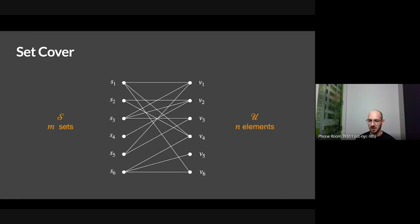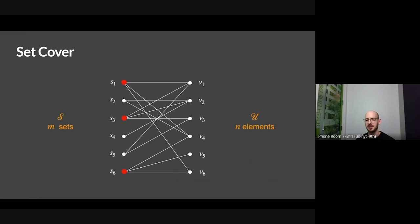So today we're going to talk about the set cover problem. I have m sets and n elements. Script S is the sets, Script U is the elements. I'm drawing this bipartite graph to represent the set system — there's a vertex for every set and every element, and there's an edge between a set and an element if the set contains the element. The goal is to pick the smallest number of sets to cover all the elements, such that every vertex on the right has some edge to a picked vertex on the left. This set of red dots is a feasible set cover solution of size three.